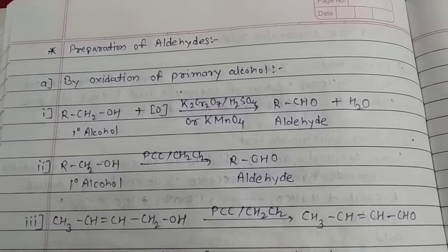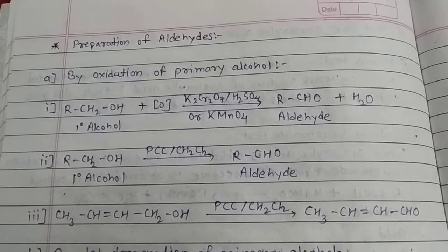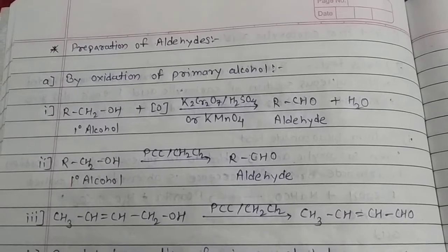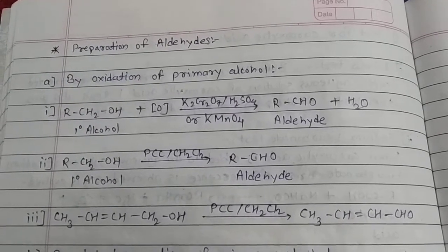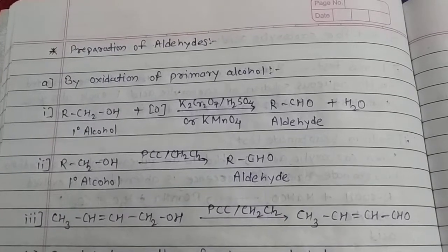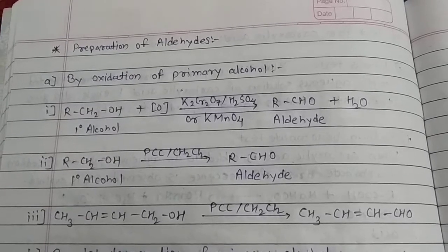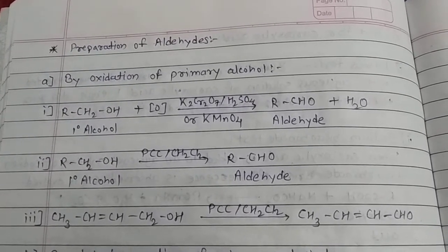First is by oxidation of primary alcohol. Primary alcohol is oxidized in the presence of potassium dichromate, K2Cr2O7, in sulfuric acid solution H2SO4, or we can take potassium permanganate KMnO4. Primary alcohol is oxidized into aldehyde.